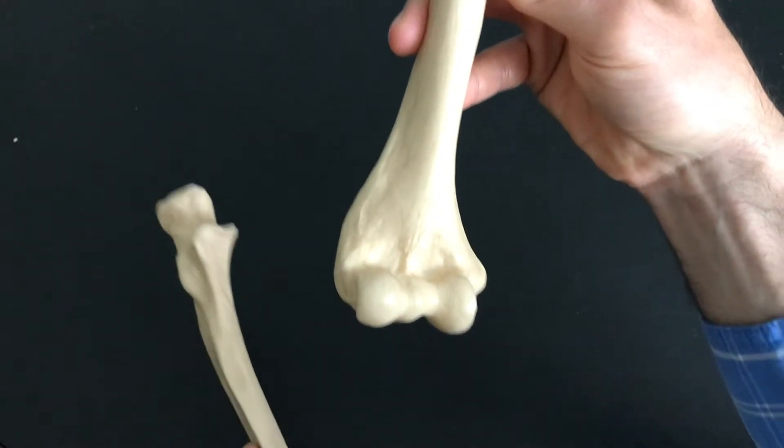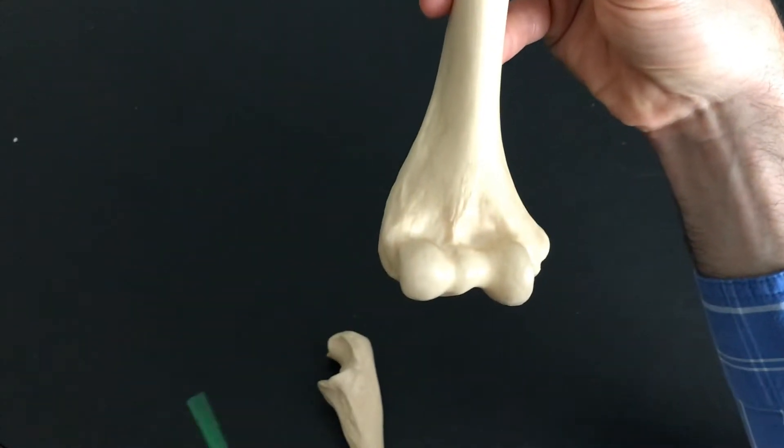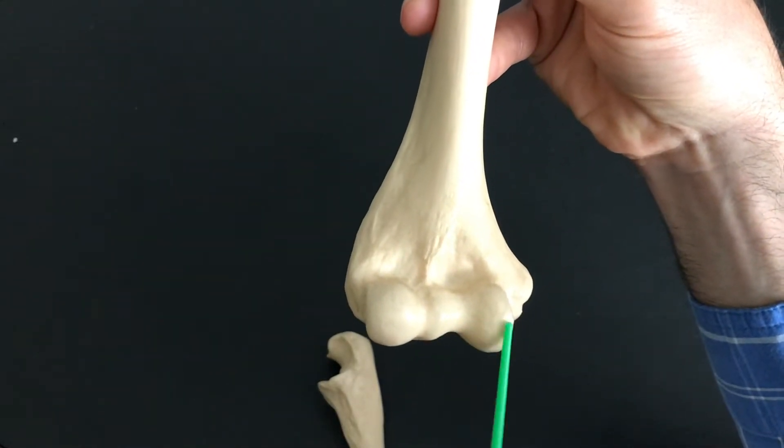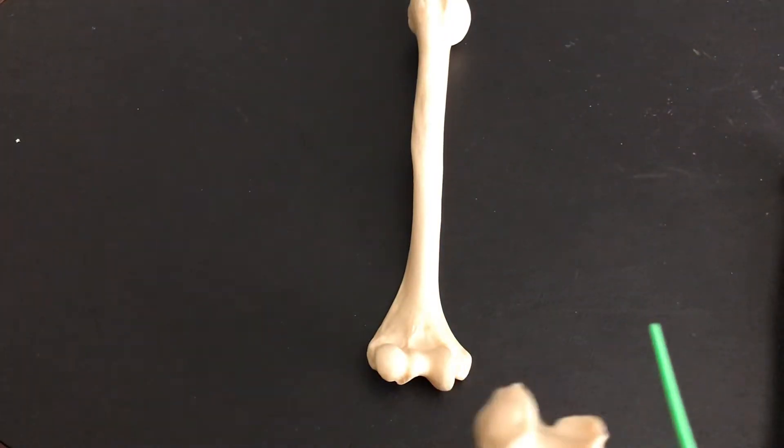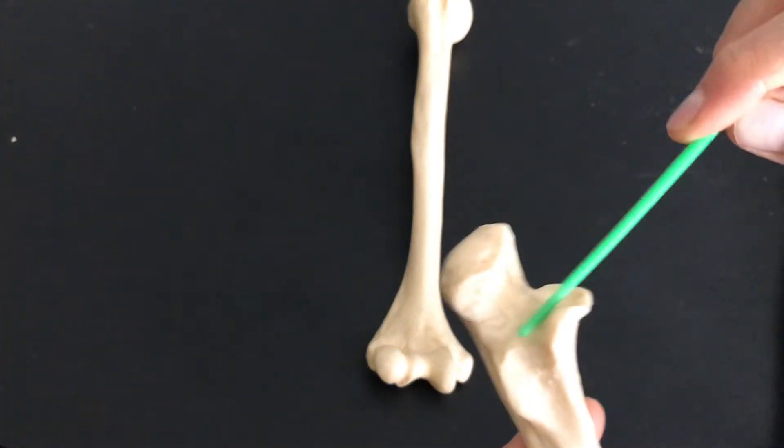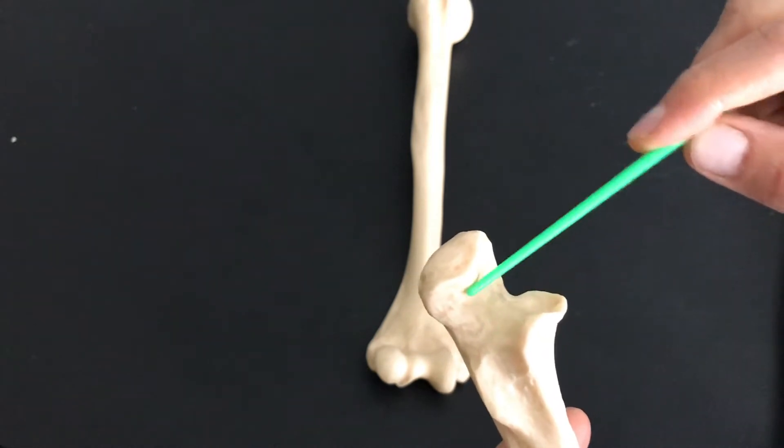We also have something called the trochlea. Here's our trochlea. And remember, on the ulna, we had the trochlear notch. The trochlear notch was right here.